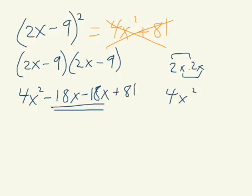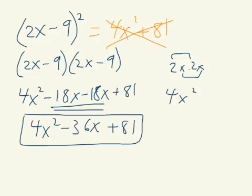These do not go away. Negative 18 minus 18 is negative 36x. Of course, this doesn't go away either. 4x squared minus 36x plus 81 is our answer.